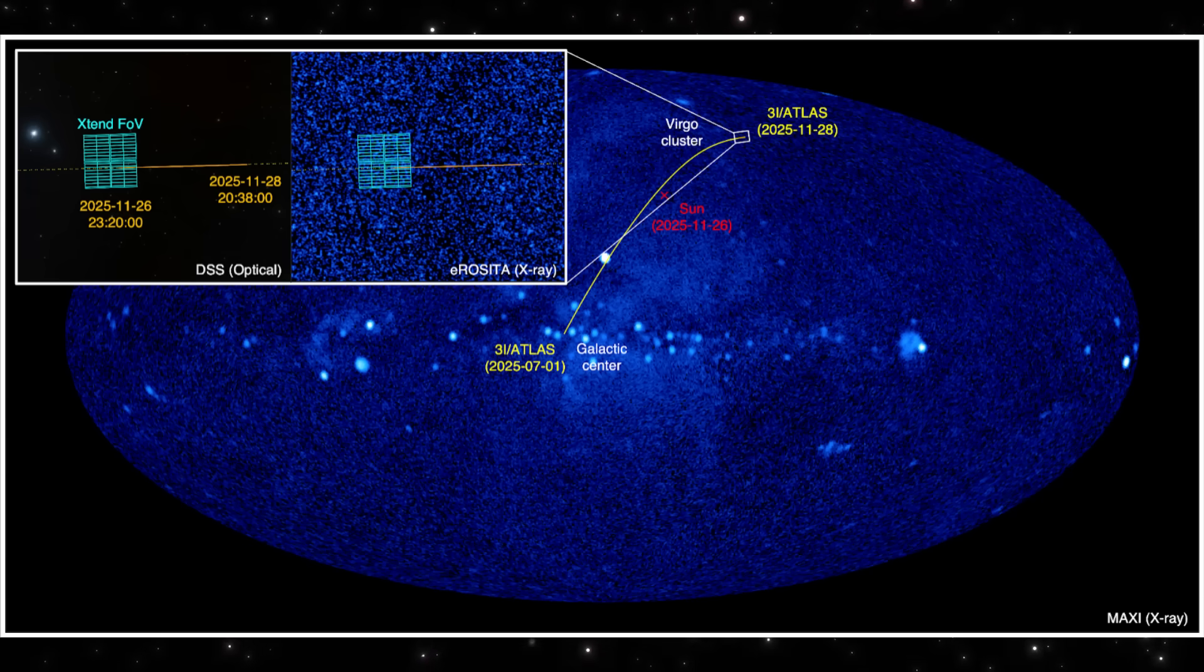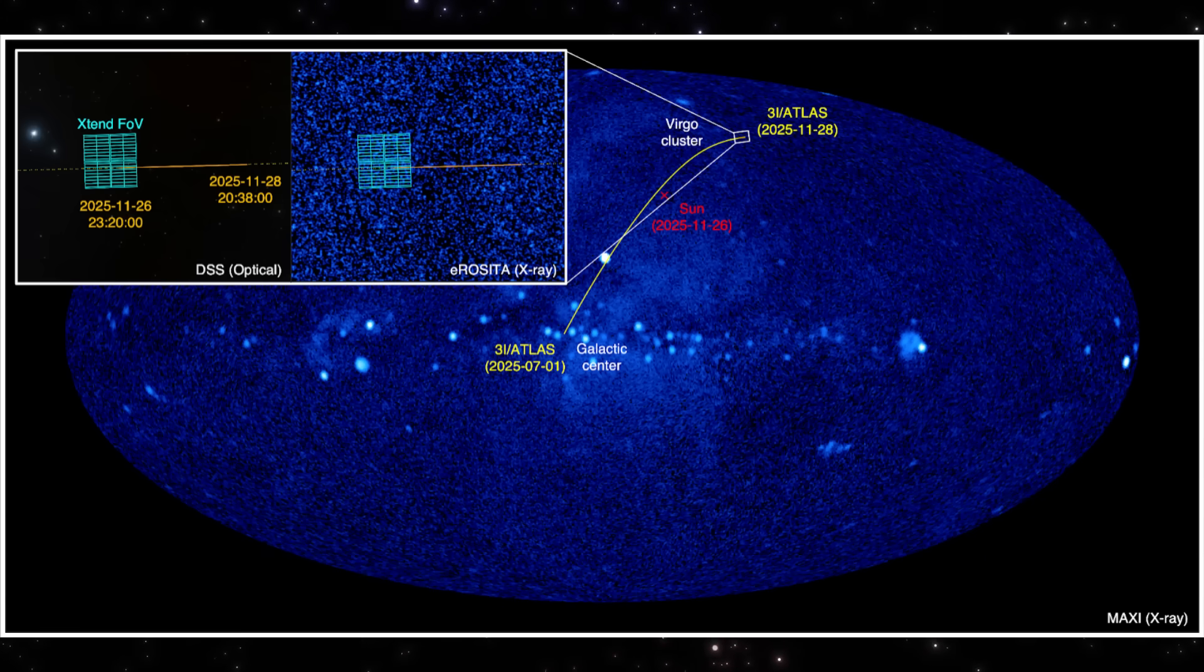Now here's where things get even stranger. This map shows three I-Atlas drifting across the entire X-ray sky. And for a brief window, every telescope looking in its direction saw something.